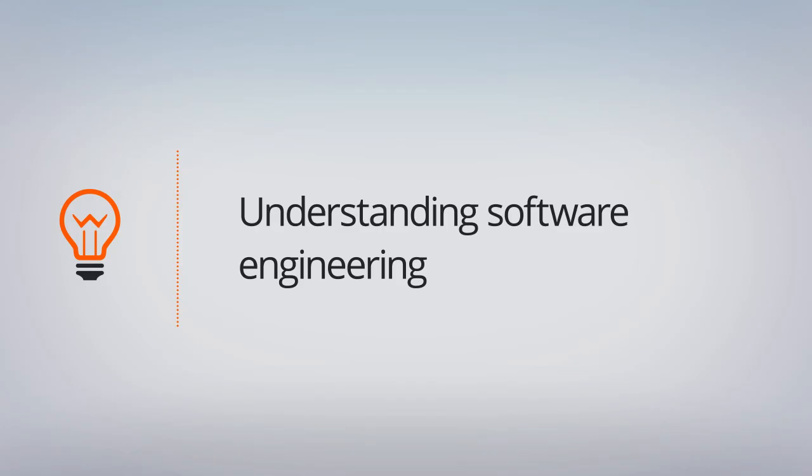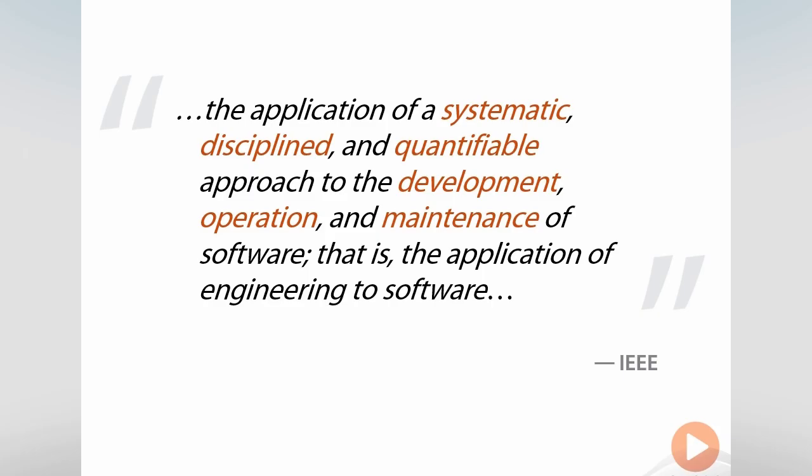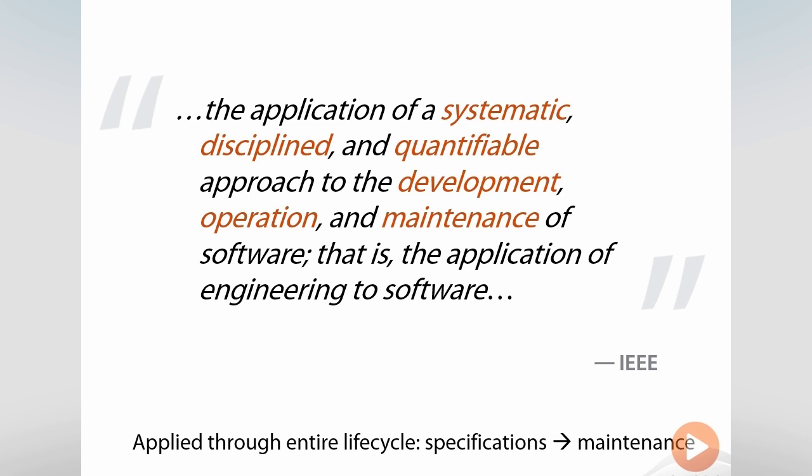Software Engineering is the application of a systematic, disciplined, and quantifiable approach to the development, operation, and maintenance of software — that is, the application of engineering to software. One observation from this definition is that software engineering is a discipline applied throughout the entire software lifecycle, spanning the early phases of system specifications all the way to maintenance after system deployment.